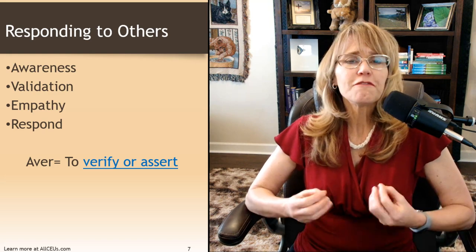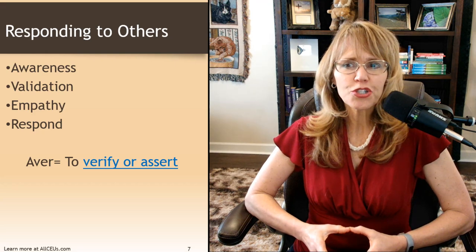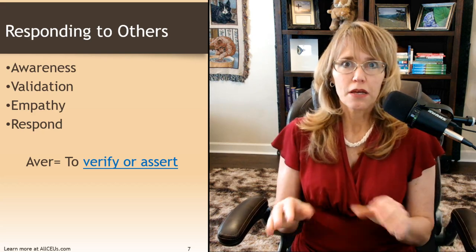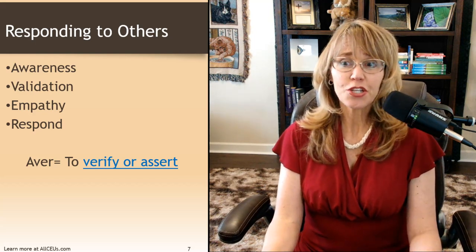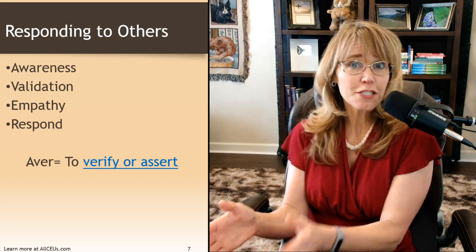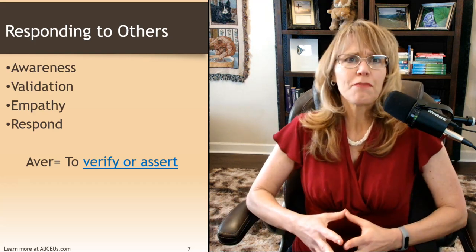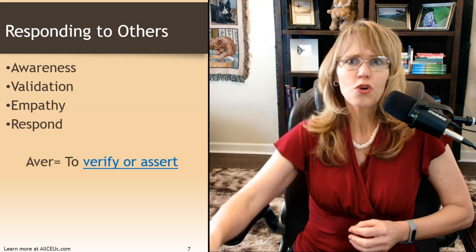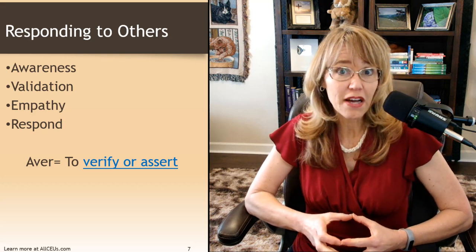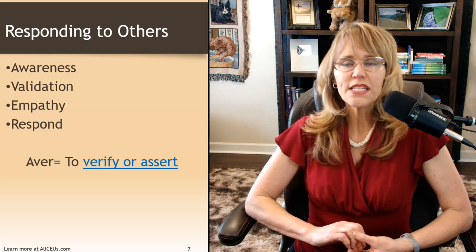And responding to others. AVER is a word that means to verify or to assert, and this is really important in emotional intelligence. It's becoming aware of your emotions and those of others, validating how both of you feel about a situation. They may feel completely differently than you — you're not saying they're wrong or that you're wrong. You're validating that in their perception, based on their experiences, this is how they're feeling. Then you empathize — once you acknowledge how somebody's feeling, you empathize with them and then respond appropriately. What steps would be most helpful?